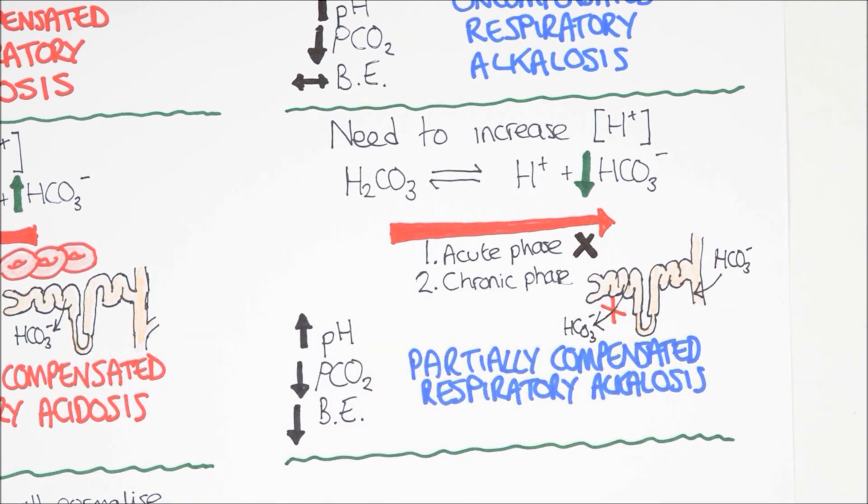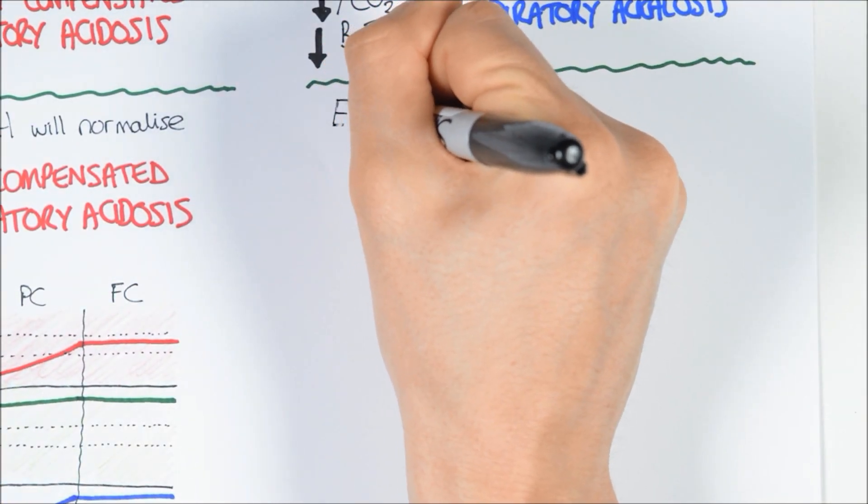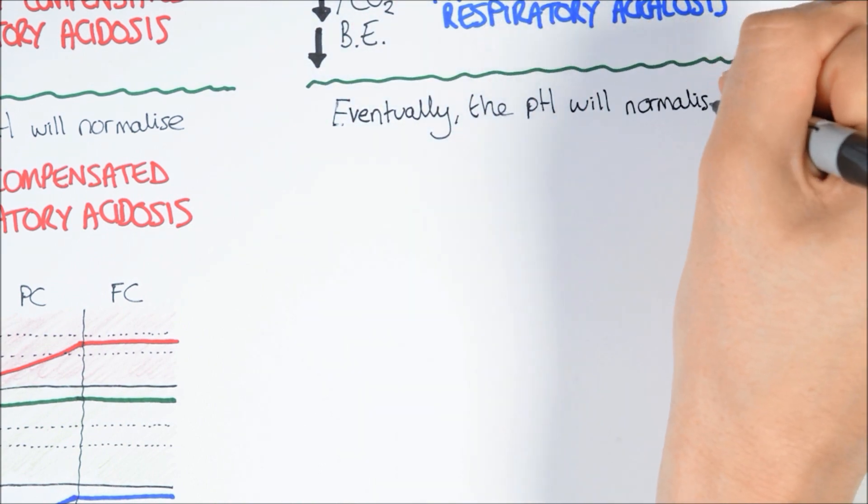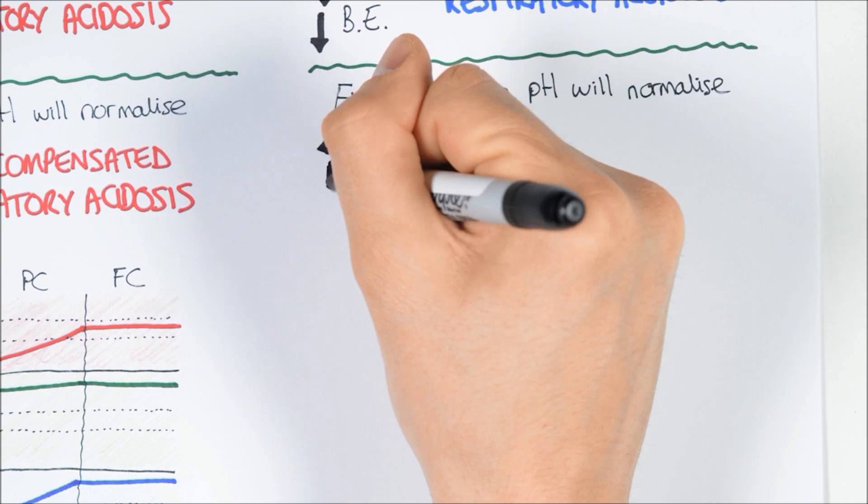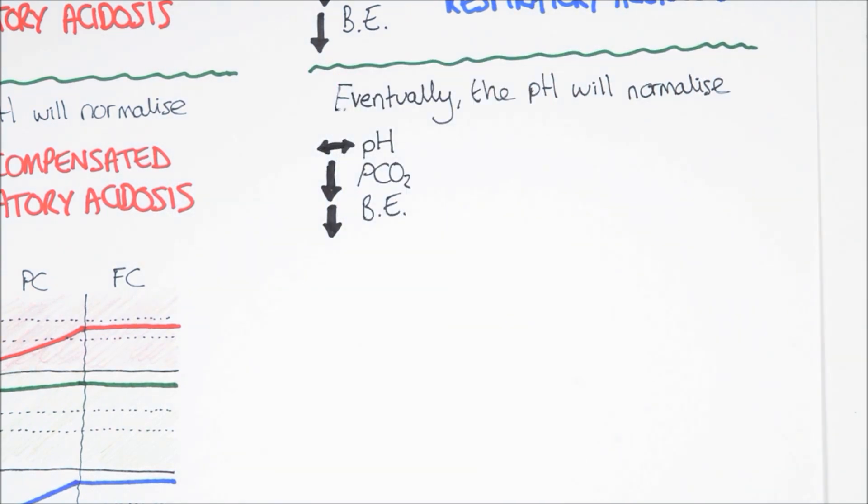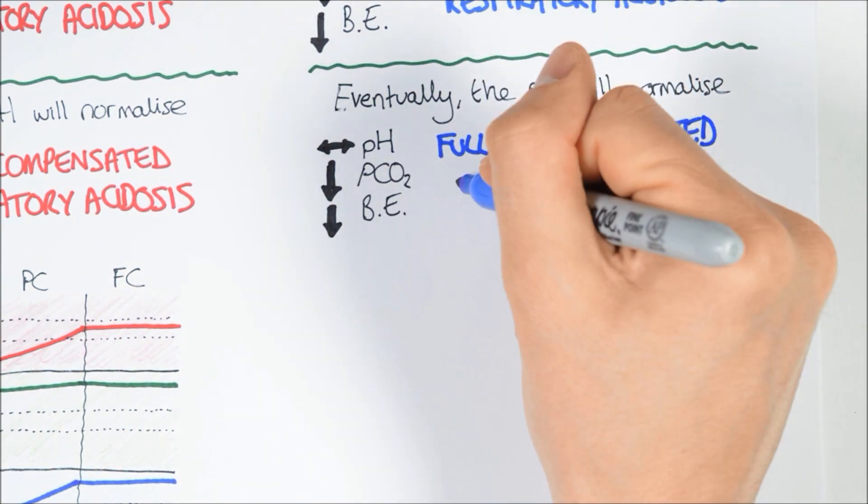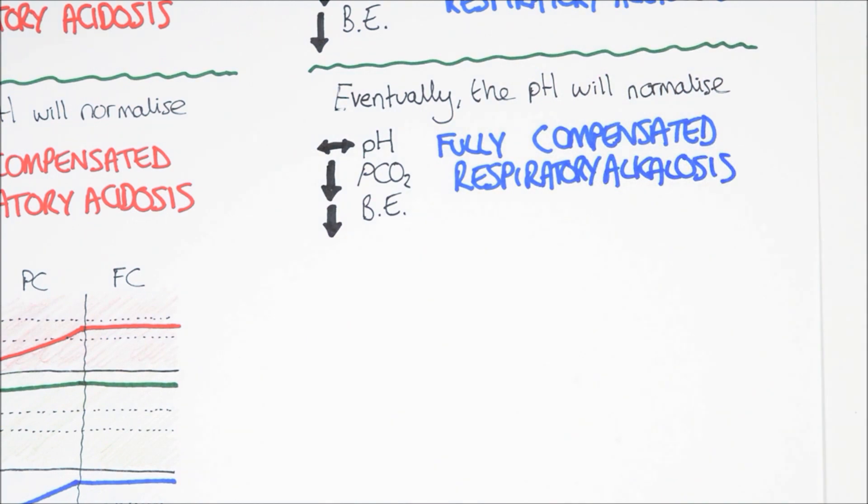Eventually, the bicarbonate excretion and increased dissociation of carbonic acid will cause proton concentration to normalize. The pH will return to normal. The blood gas will show a normal pH, but PCO2 and base excess will be lower than normal. This is now a fully compensated respiratory alkalosis.